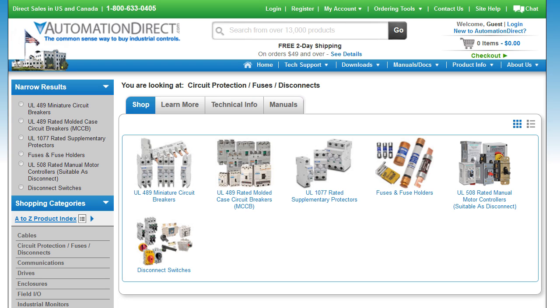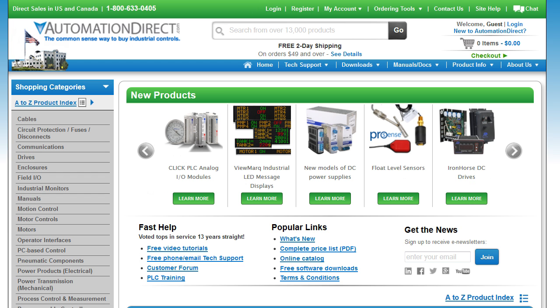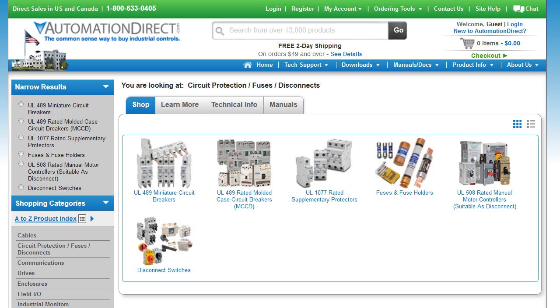With so many circuit breaker options and accessories, selecting the one you need may seem overwhelming. Fortunately, the AutomationDirect website makes it easy. Just select circuit protection and if you want a miniature circuit breaker or the larger MCCB.